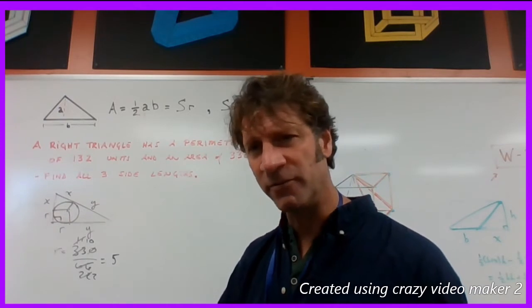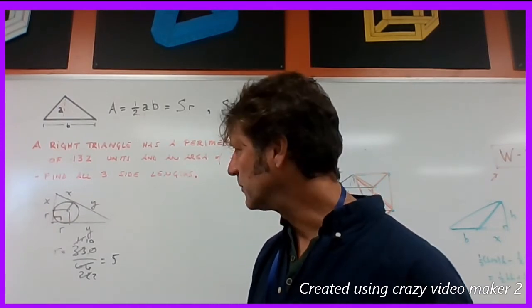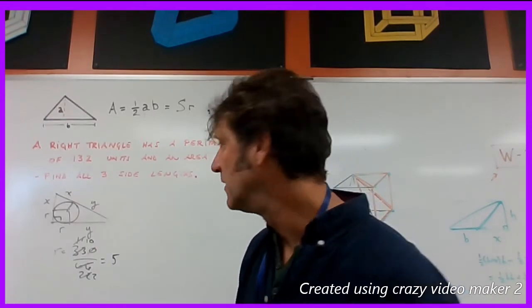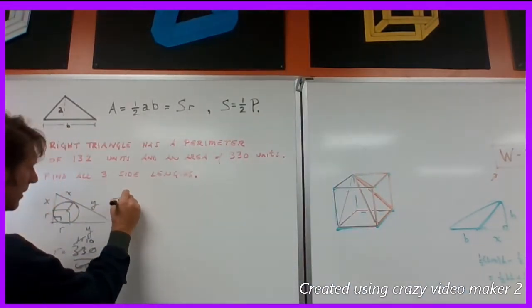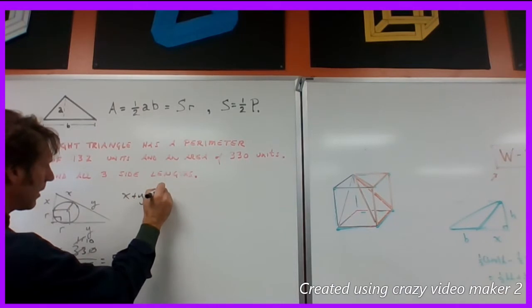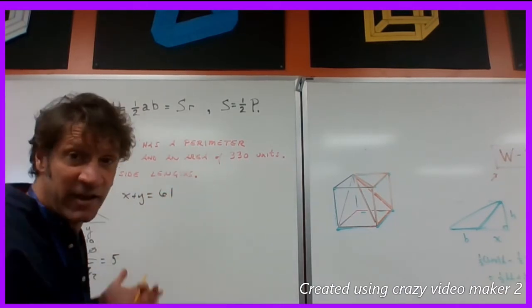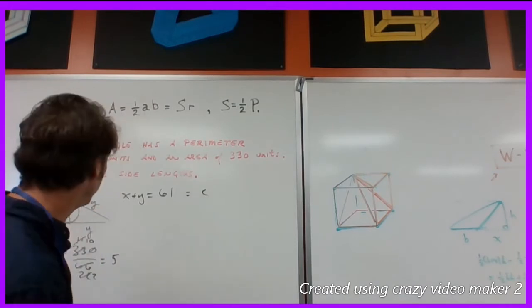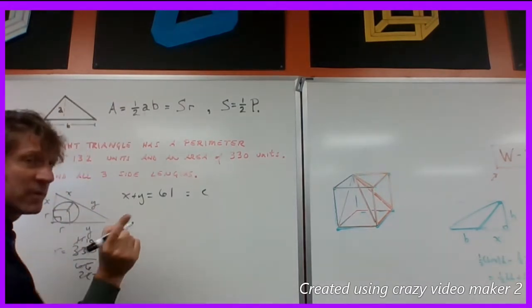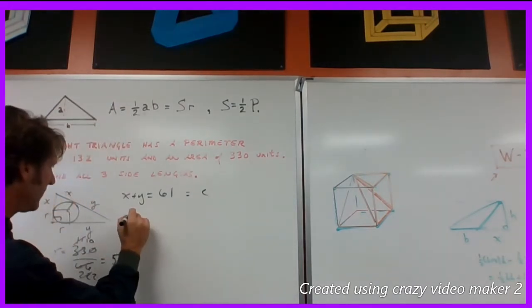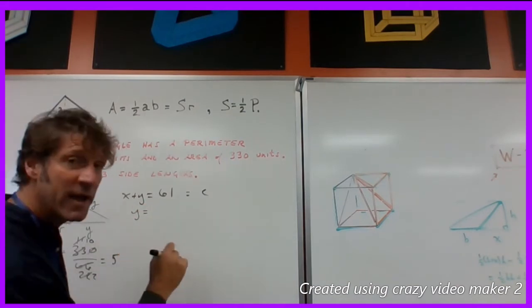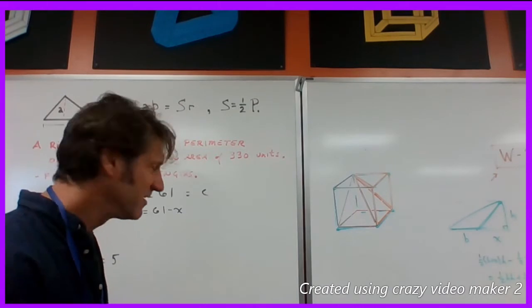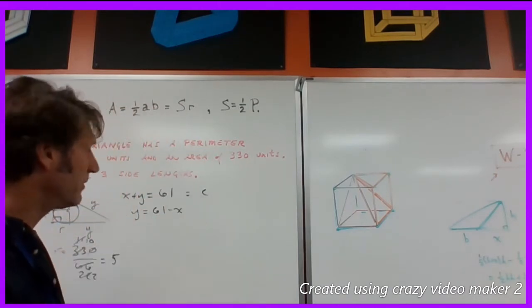Okay, so x plus y plus r is equal to, oh sorry, x plus y is equal to 61. So that already equals our hypotenuse, you know, so that equals c in our abc question. Okay, it also means that y is equal to 61 minus x. That's where we can have some fun with this 330.